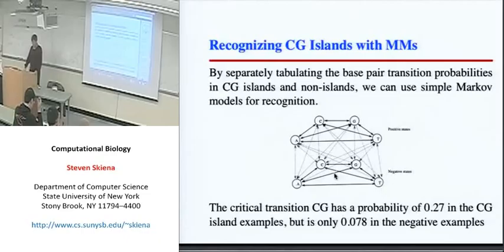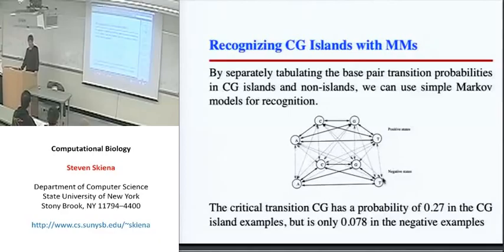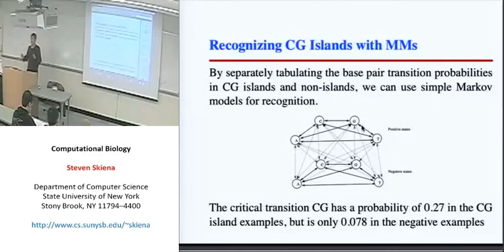Our goal is to use various ways of interpreting this model on a particular string to determine what the labels of the hidden states are. In the case of a CG island model, we have positive states — meaning in the CG island — and negative states, meaning outside the CG island. Whether a part of a string is in a CG island or not depends on whether it's labeled going through positive or negative states.